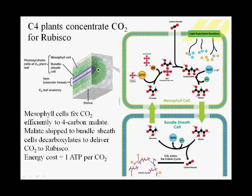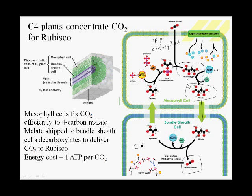The mesophyll cells and the bundle sheath cells in C4 plants have different chloroplasts. The mesophyll cells use PEP carboxylase and C4 to fix carbon dioxide and form a four-carbon compound, which is then converted to malate. This four-carbon malate is transported to the bundle sheath cell, where it is decarboxylated and releases carbon dioxide inside the chloroplast of the bundle sheath cell. The bundle sheath cell is actually a C3 photosynthetic cell because it has rubisco and the Calvin cycle, so the rubisco can use the delivered CO2 to run regular C3 carbon fixation.